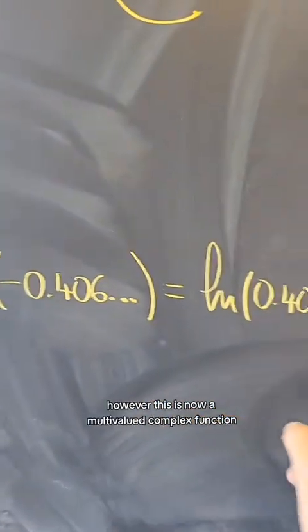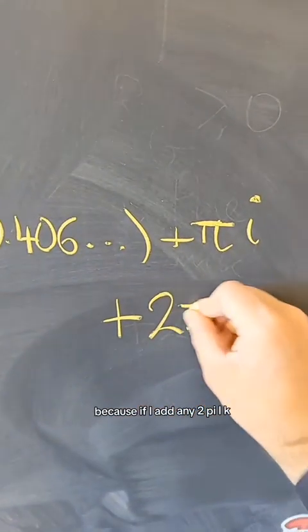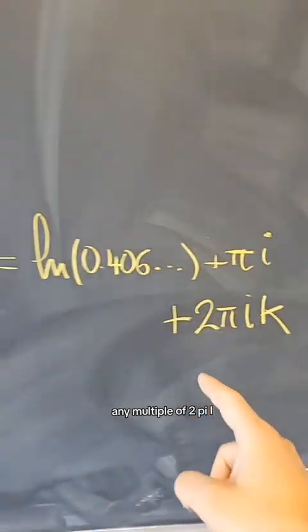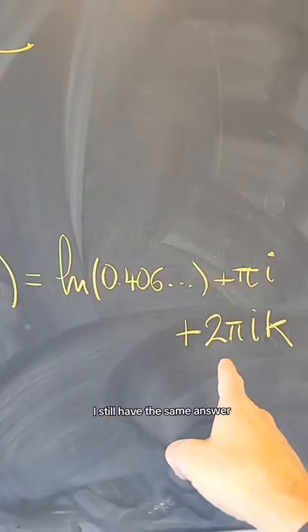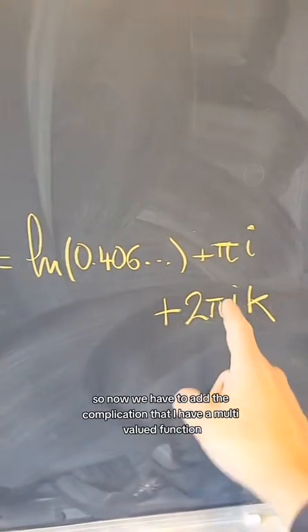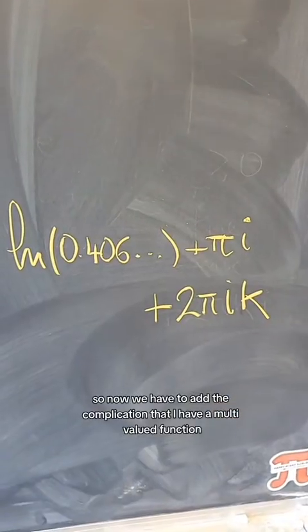However, this is now a multivalued complex function because if I add any 2 pi i k, any multiple of 2 pi i, I still have the same answer. This e to this number will still give me minus 0.406. So now we have to add the complication that I have a multivalued function.